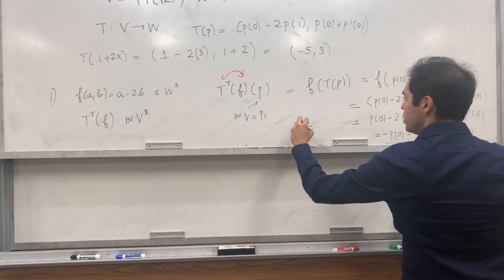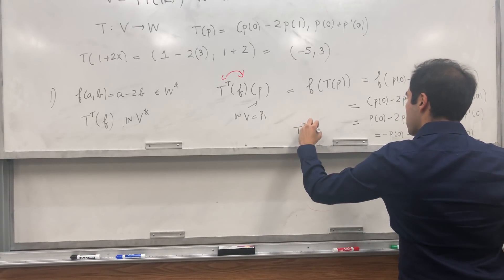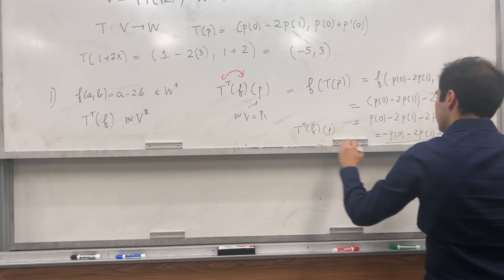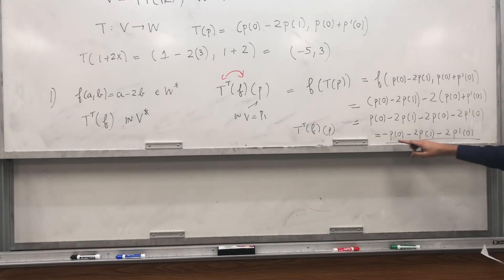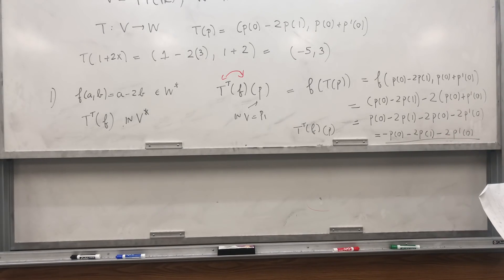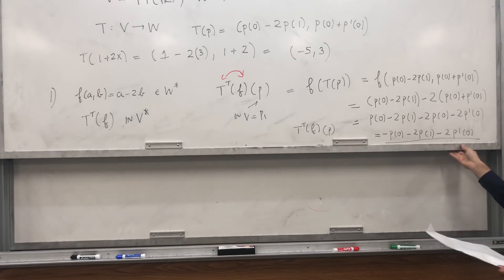And if you do that, you get minus P of 0 minus 2P of 1 minus 2P prime of 0. So this is what T transpose F does. It's the functional that takes P as its input and spits out minus P of 0 minus 2P of 1 minus 2P prime of 0. And indeed, it's a linear transformation from polynomials to real numbers.